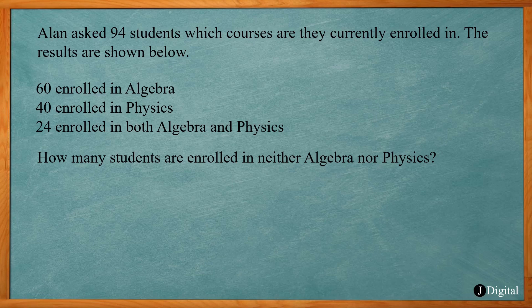60 enrolled in algebra, 40 are enrolled in physics, and 24 are enrolled in both algebra and physics. How many students are enrolled in neither algebra nor physics?